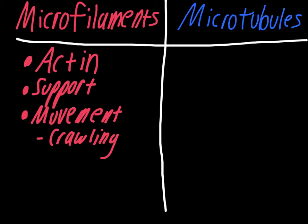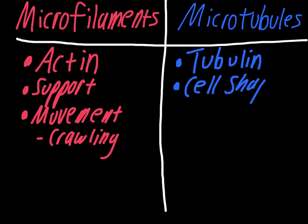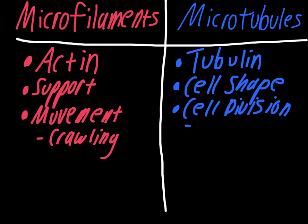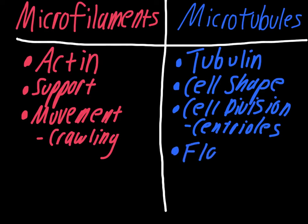For microtubules, they're made of a protein called tubulin — a name that pretty much gives away which cytoskeleton type it belongs to, since tubulin goes with microtubules. They're important in maintaining cell shape, as seen in the electron image where they support the interior structures. They're important during cell division and make up the centrioles. Finally, they make up the flagella — that long tail-like structure on the prokaryote — which has the nine plus two structure.